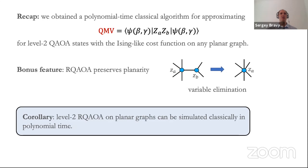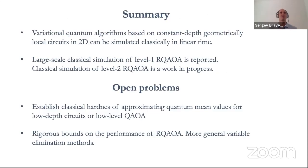There are some interesting open problems. It would be very interesting to establish hardness results for approximating quantum mean values — say in the case of low-depth quantum circuits or low-level QAOA states — and to establish rigorous bounds on the performance of RQAOA, and perhaps consider more general strategies for variable elimination. Thank you for your attention.